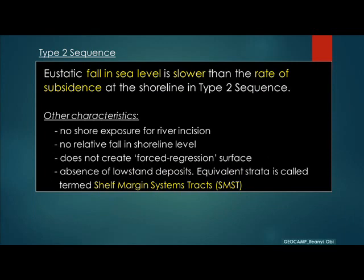The Type 2 sequence is actually the flip scenario, in which the eustatic or global sea level fall has occurred at a slower rate than that of subsidence at the shoreline. When that happens, there is no sub-aerial exposure of the shore, meaning no river incision. The shoreline remains relatively around the shore areas, not further basinward as in the Type 1 scenario. There is an absence of a forced regression surface and the absence of low stand deposits. Some authors refer to packages in this scenario as a shelf margin systems tract.